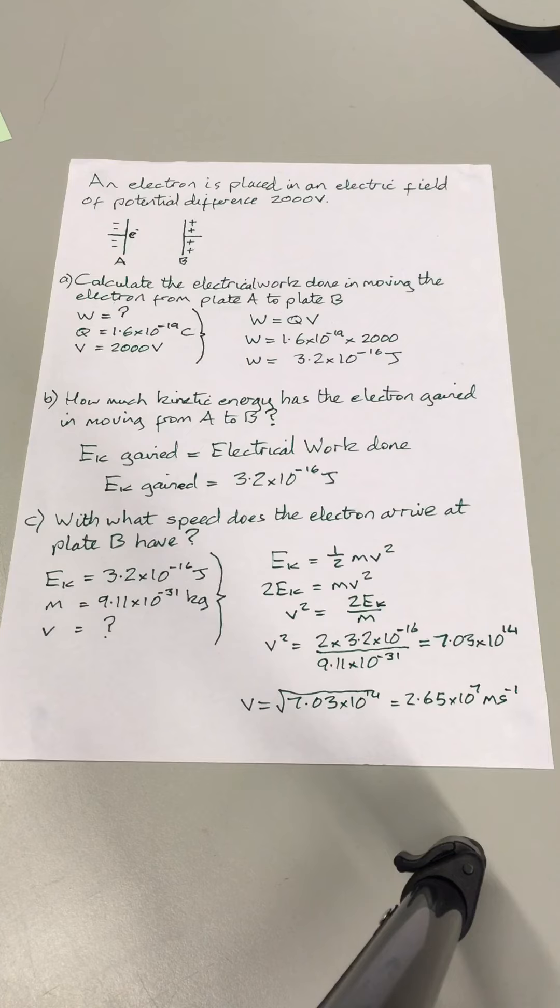So the electrical work done, which we've already said is the kinetic energy gained, is written there as 3.2 times 10 to the negative 16. The mass of an electron, again you can find that in a datasheet, is 9.11 times 10 to the negative 31. So you equate the two energy values.